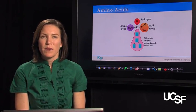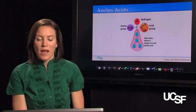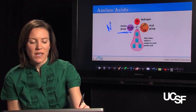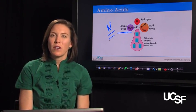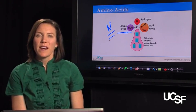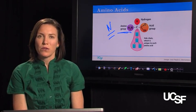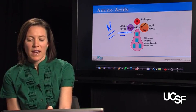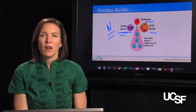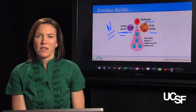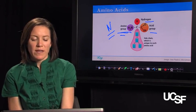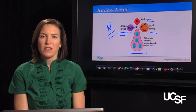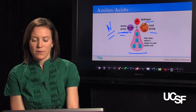An amino acid contains an amine group — amine means nitrogen-containing. Proteins are unique and different from carbs and fats in the sense that they're the only macronutrient that contains nitrogen. All amino acids have an amino group, an acid group, and a hydrogen group. What makes an amino acid unique is what's called its side chain, which is unique to each amino acid.